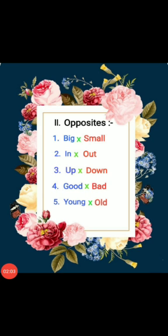Second Roman: opposites. First one: big — small. S-M-A-L-L. Small. Second one: in — out. O-U-T. Out.